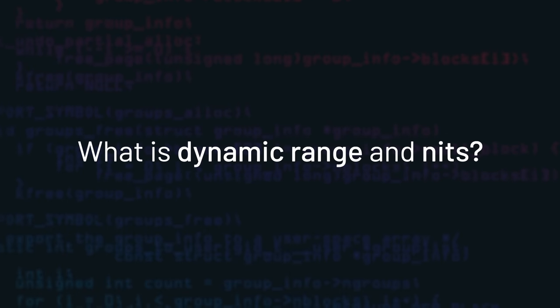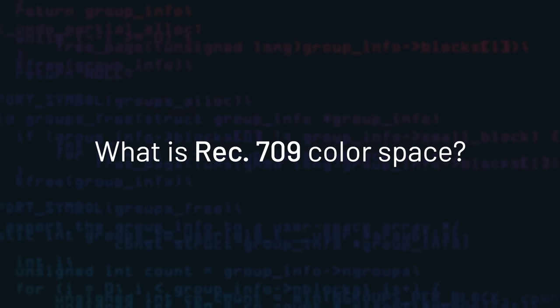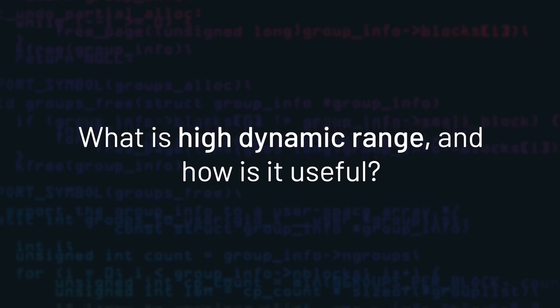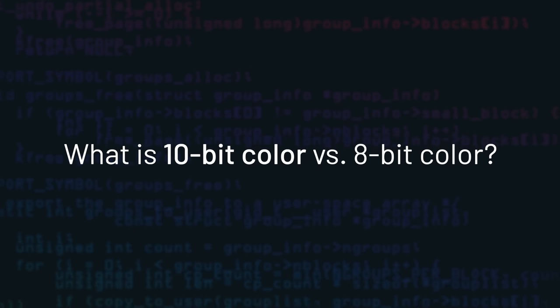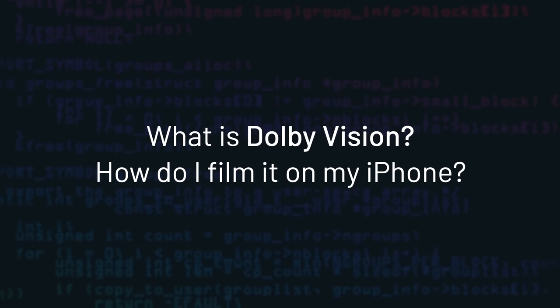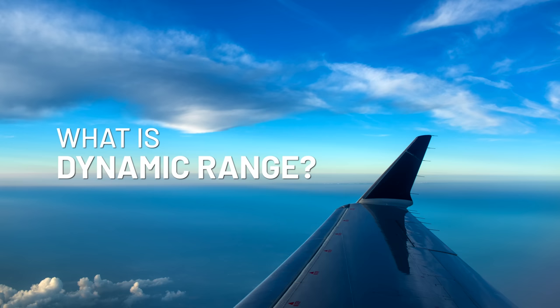But I know why you're here — you're curious, you want to know more than that. So here's the stuff we're going to be talking about today: What is dynamic range and what are nits? What is Rec.709 color space? What actually is high dynamic range and how is it useful? What is 10-bit color versus 8-bit color? What is Dolby Vision? How do I film Dolby Vision and HDR on my iPhone? And how do I watch the high dynamic range footage?